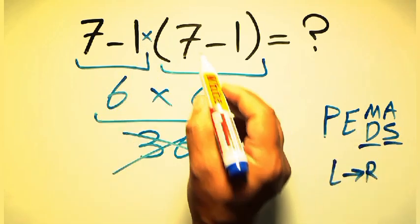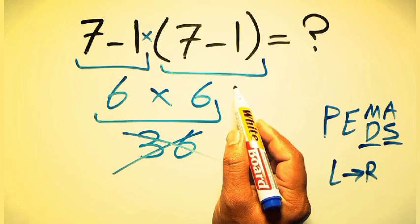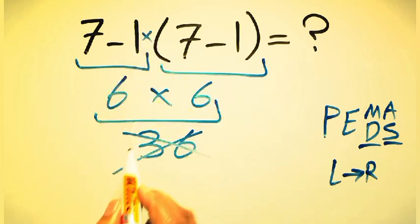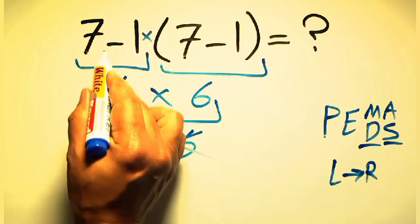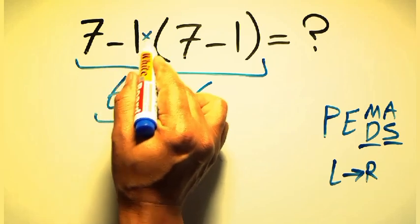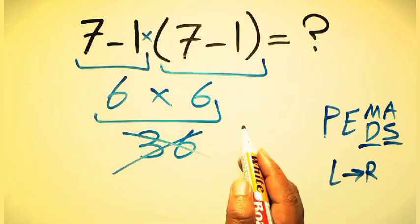So according to PEMDAS, first we have to do this parentheses, then this multiplication, and finally this subtraction. If we do this subtraction before this multiplication or this parentheses, it is wrong.